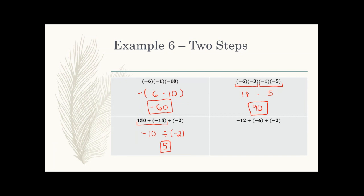Bottom right: three negative signs — odd — so I'll end up with a negative answer. First, negative 12 divided by negative 6: two negatives give a positive, and 12 divided by 6 is 2. Then 2 divided by negative 2: positive and negative gives a negative, and 2 divided by 2 is 1. So the answer is negative 1. That negative answer matches what we predicted — three negative signs means a negative result. It's just a way to check yourself and make sure you have the right sign.